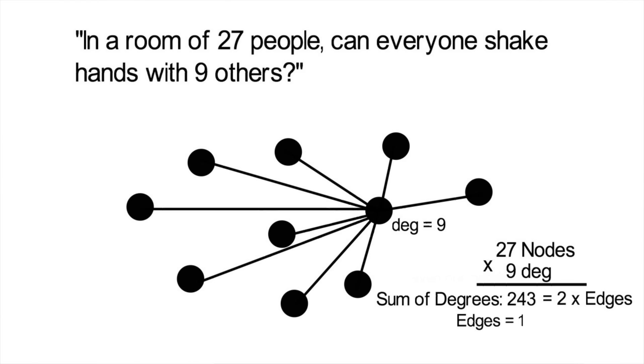The amount of edges or lines has to be an integer, like 1, 2, 103, etc. So the answer is no. In a room of 27 people, everyone cannot shake hands with exactly 9 others.